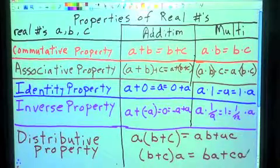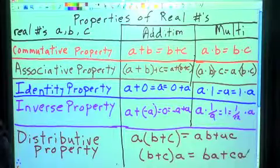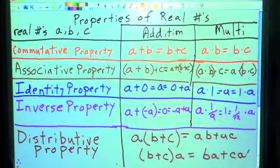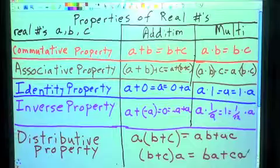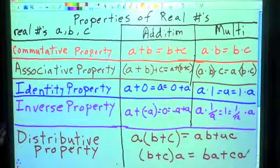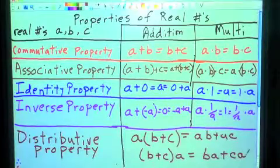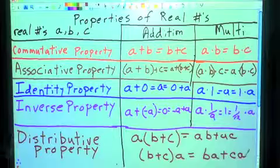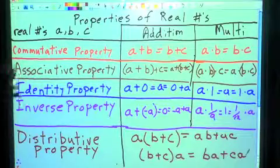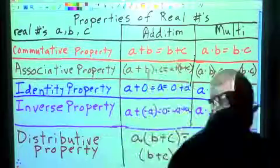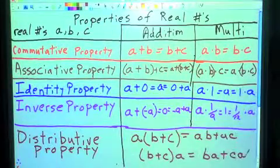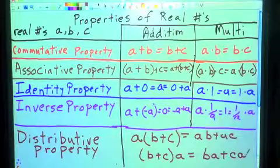Those are the properties of real numbers. If you have problems with them, you need to practice. Go out on the internet, find a way to remember them, memorize them, look in the book — do whatever you need to do. Come see me, talk to your neighbor. Get these properties down because we're going to be using them. You'll use them the rest of your math career.